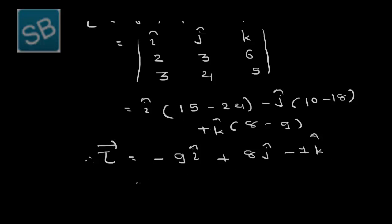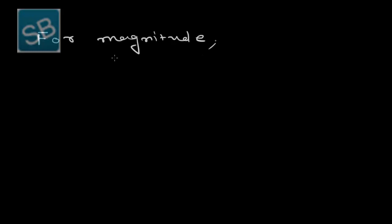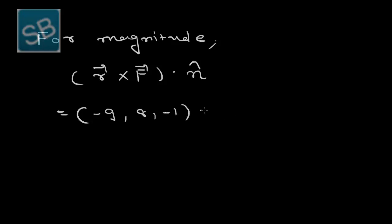This is the value of torque τ, which can also be written in component form as (−9, 8, −1). To find the magnitude of torque along a unit vector n̂ = (1/√2)(1, 1, 1), we compute the scalar product of r × F with this unit vector.